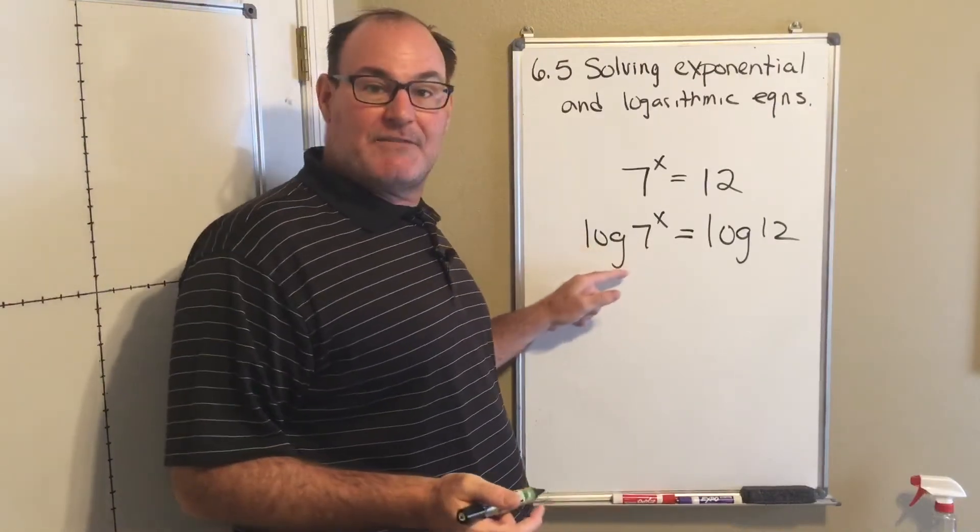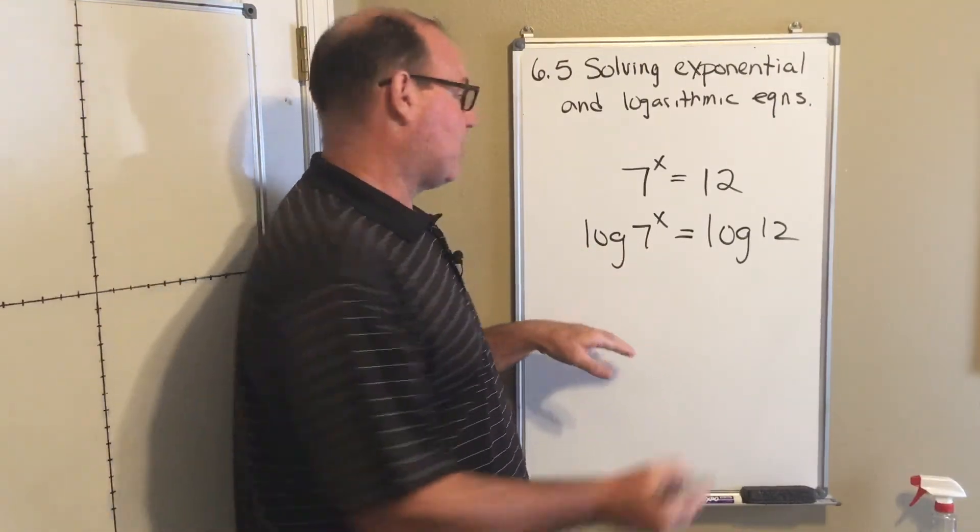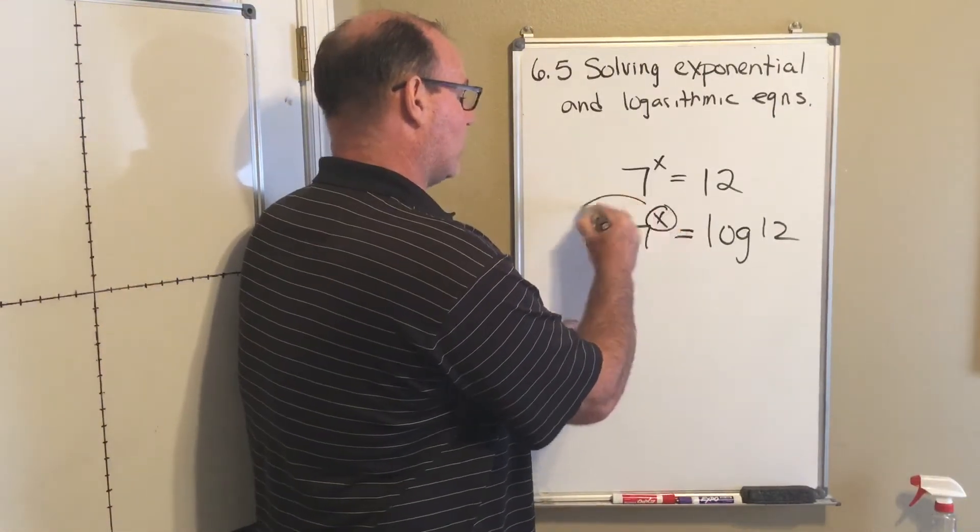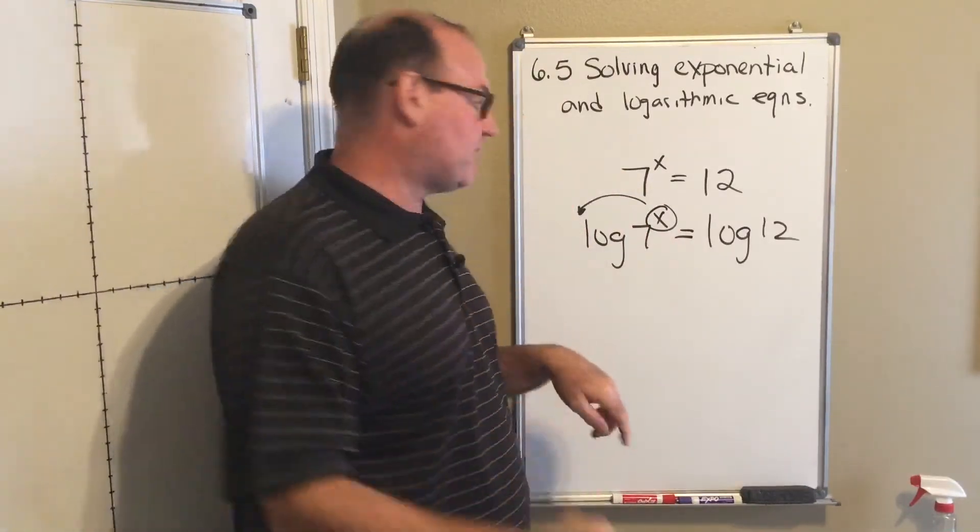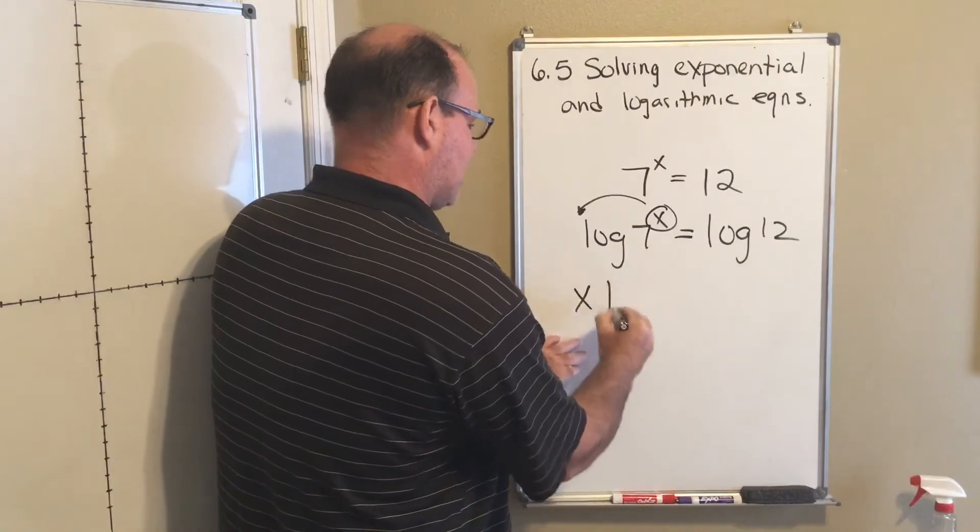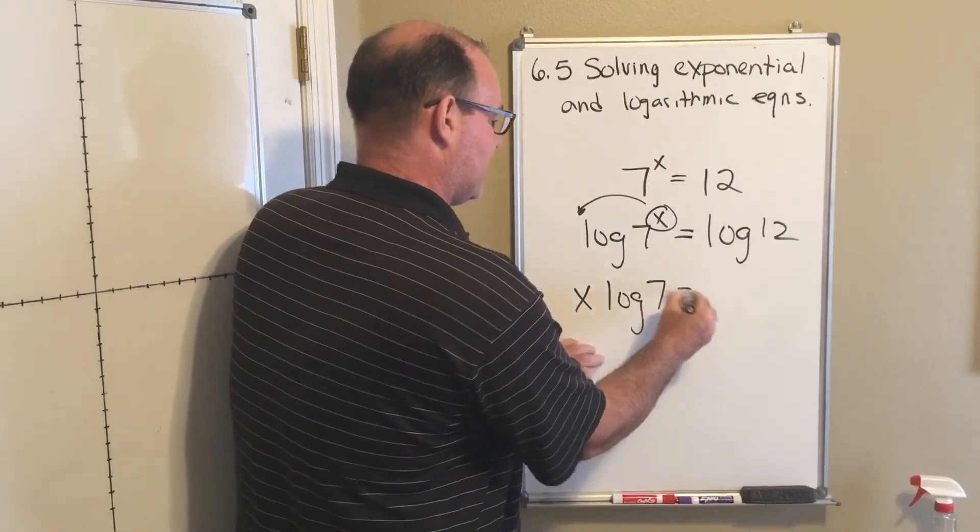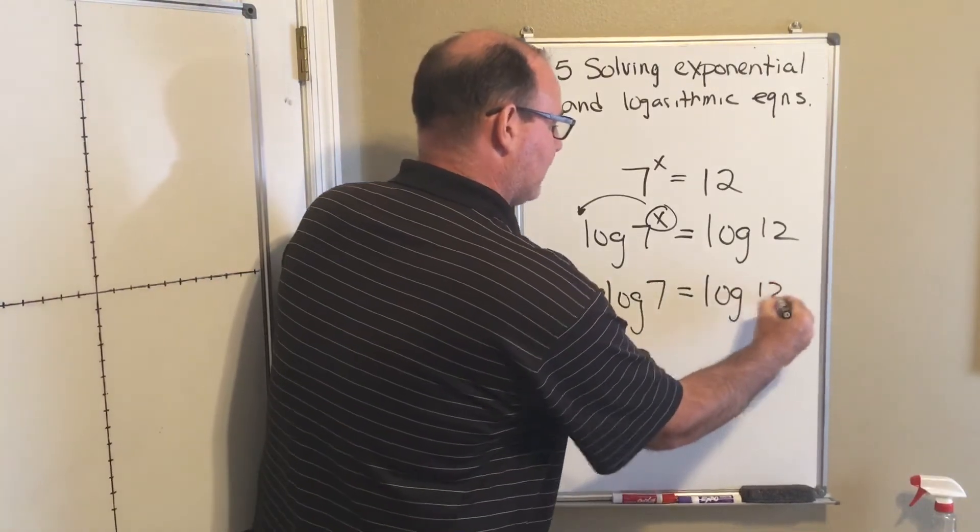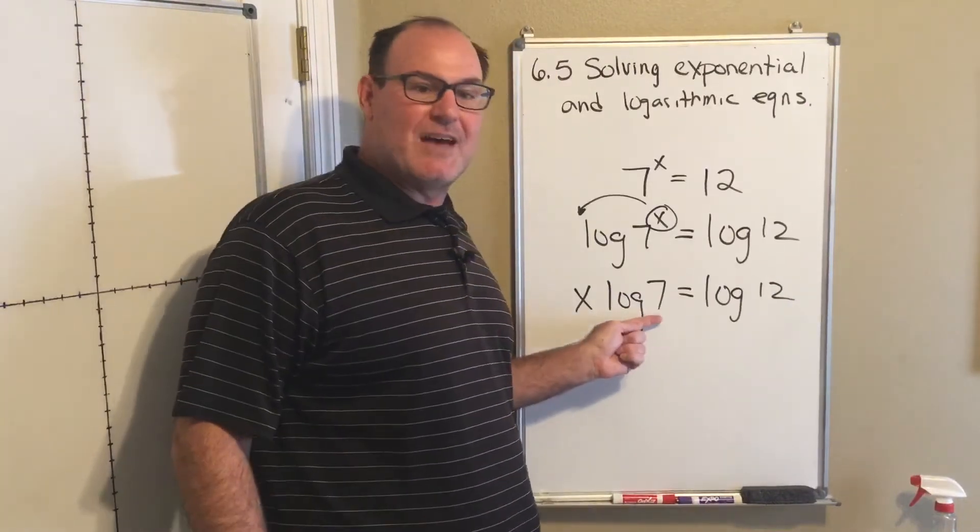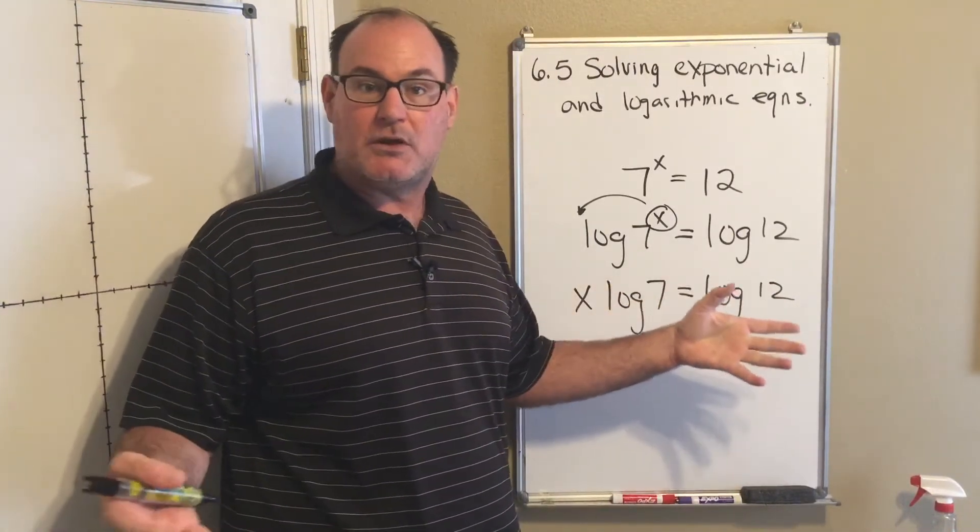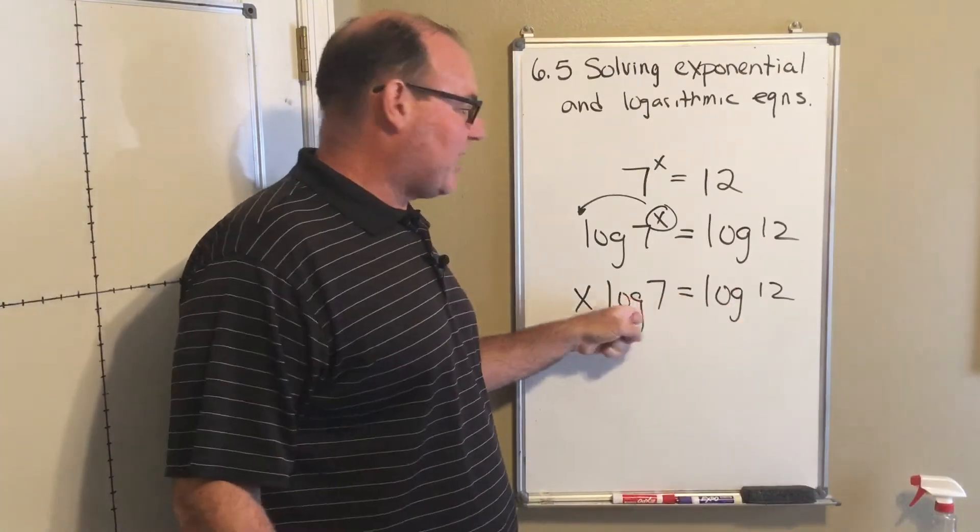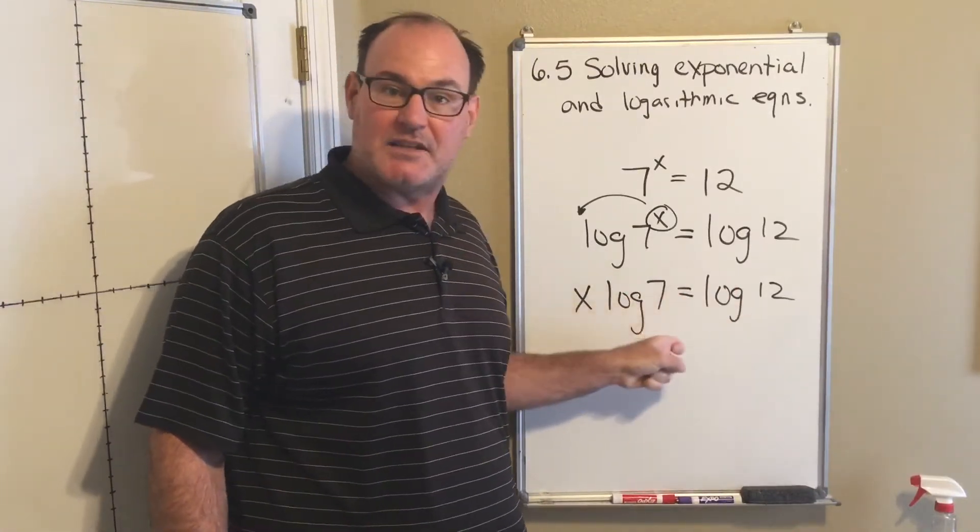What I can do on the left side, because I've taken the logarithm of both sides is I'm going to use the power rule. The power rule of logarithms says I can take that power and move it down to the front. So I have x times the log of 7 is equal to the log of 12. So log of 7 is a number. Log of 12 is a number. They're gross numbers. They're irrational numbers, but they are just a constant value.